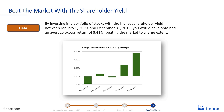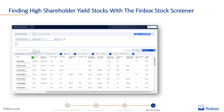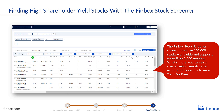You can find the link to the backtest in the description below. You can find the stocks with the highest shareholder yield using the Finbox Stock Screener. It covers more than 100,000 stocks worldwide and supports more than 1,000 metrics. What's more, you can also create custom metrics after exporting the results to Excel. The best part? You can use it for free forever.